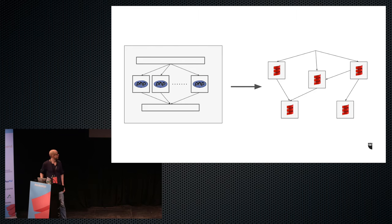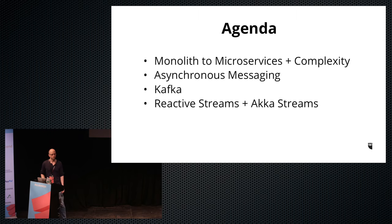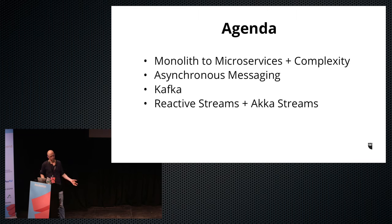For the past couple of years, we've been working on transitioning from a massive PHP application to a set of Scala-based microservices to help us scale our application and our organization. Today I want to talk about the transition from a monolithic application to a distributed system of microservices and some of the ways that complexity and sources of failure can be introduced. I also want to talk about asynchronous messaging, specifically the publish-subscribe pattern and how it can help reduce some of that pain. I want to show how Kafka, which is an asynchronous pub-sub messaging system, is a great foundation to do that. And finally, I'll talk about Reactive Streams and Akka Streams and how they can be used to easily work with Kafka in your Scala code.